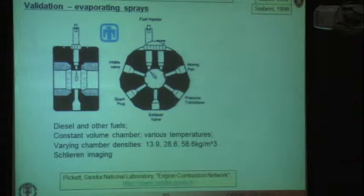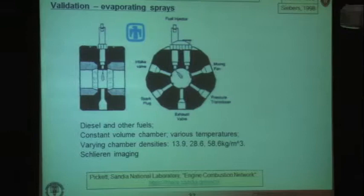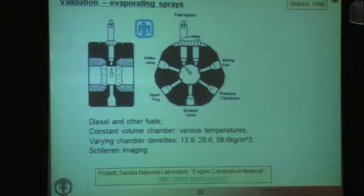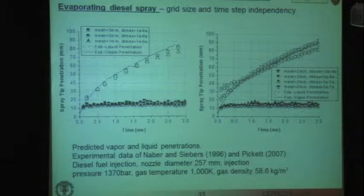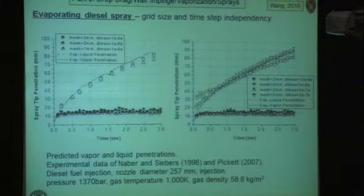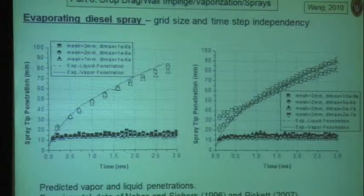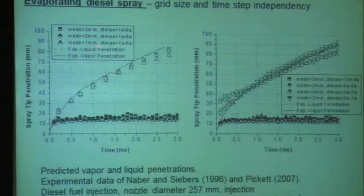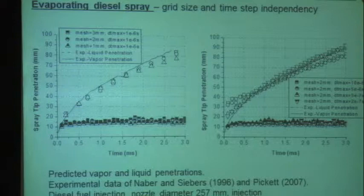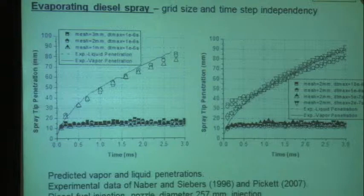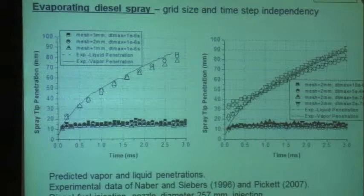A lot of work is being done at Sandia National Labs. The Engine Combustion Network is publishing reference data widely used by researchers as validation data for sprays in a constant volume vessel — measuring spray penetration, soot formation, and other parameters under very standardized conditions. Here are examples where we've modeled some of the Sandia spray data, showing spray tip penetration versus time for liquid penetration and vapor penetration for various meshes, going from 3 mm down to 1 mm with different numerical time steps. We see reasonable agreement over a fairly wide range of vapor and liquid penetration conditions.